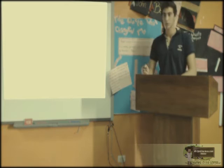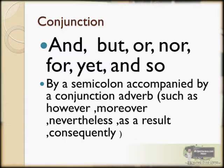Okay, let's skip this issue right now because we'll have enough time. We are going to move to conjunctions. A conjunction contains the words: and, but, or, nor, for, yet, and so — by a semicolon accompanied by a conjunction adverb such as however, moreover, nevertheless, as a result. A conjunction is a word that lies between two complete sentences with a comma before it, so the sentence does not make a comma splice.